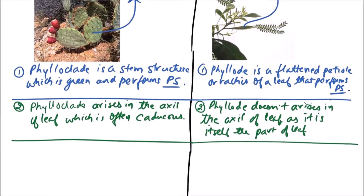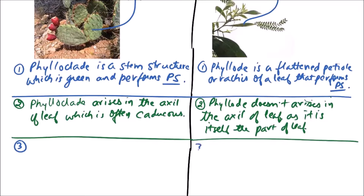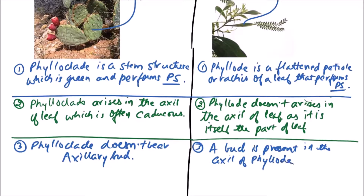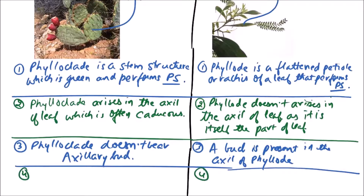The next difference is regarding axillary buds. A phylloclade does not bear an axillary bud, while a bud is present in the axil of a phyllode.